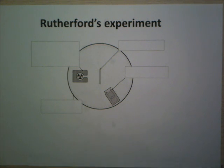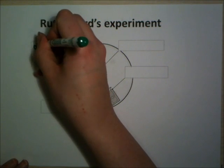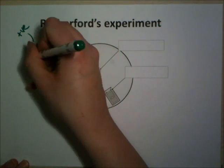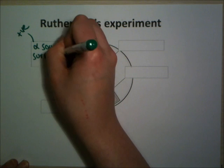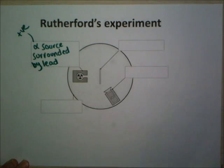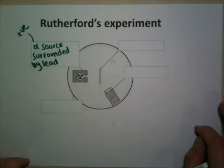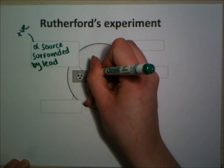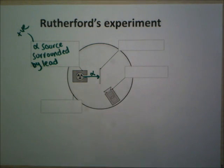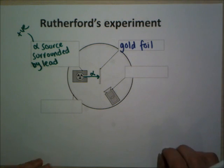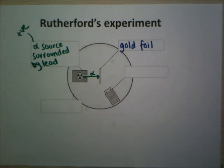He had a setup that looked something like this. There was an alpha source - remember, alpha is positive radiation - and it was surrounded by lead. We know that lead blocks radiation; it blocks gamma radiation, so it definitely blocks alpha radiation. That means there's just a little gap where the alpha radiation could come out, and it was being fired at a sheet of gold foil. It was so thin that it was literally only two or three atoms thick - really, really thin foil.